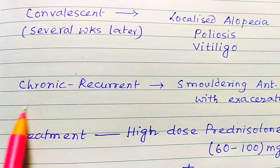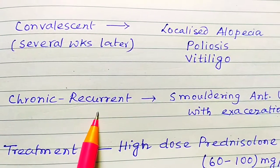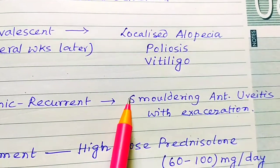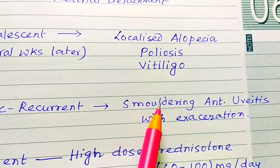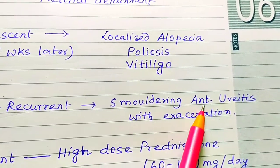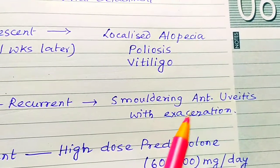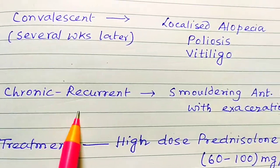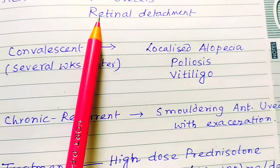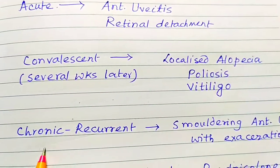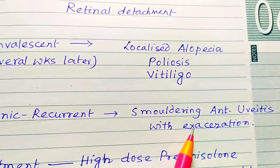The other phase is the chronic recurrent phase. In this phase you will have smoldering anterior uveitis with exacerbation — the anterior uveitis comes back repeatedly.